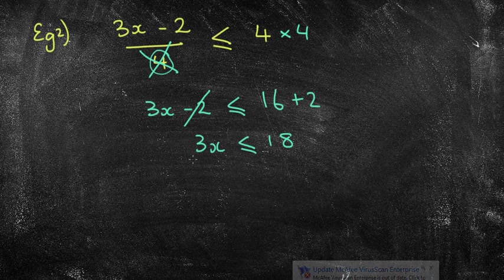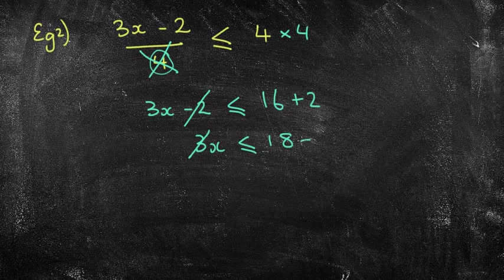I'm going to add 2 to both sides. So I get 3x is less than or equal to 18. Now, the way I can get rid of the 3 in this case is divide by 3. So 3 divided by 3 is 1. 18 divided by 3 is 6. So I get x is less than or equal to 6.